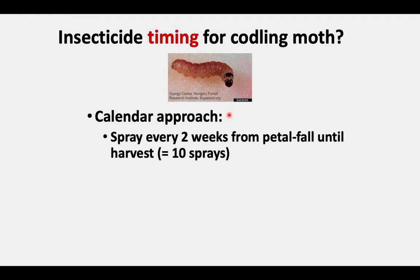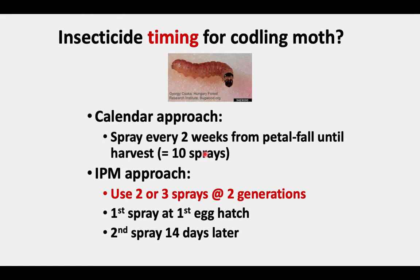There are two approaches. For the calendar approach, you can spray every two weeks from petal fall until harvest, which would be about 10 sprays, and that should do a fairly good job at controlling this pest. But you really are making more sprays than needed. So the integrated pest management approach is to use two or three sprays on each of two generations. That first spray should be at the time the first eggs are hatching, and the second spray 14 days later.